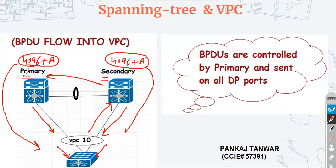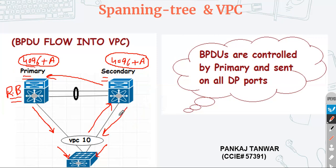Let's say the primary switch is also the root bridge. Both devices are sending BPDUs to the downstream device. If the root bridge goes down, because the secondary device is also using the same bridge ID, the downstream device is not going to detect a topology change. Port channel 2 will not go into the designated state. Without the peer switch feature, the port would reconverge through RSTP states taking around three seconds.